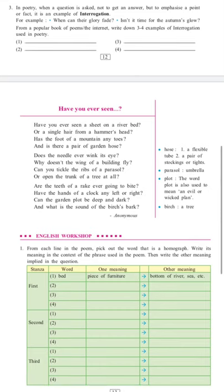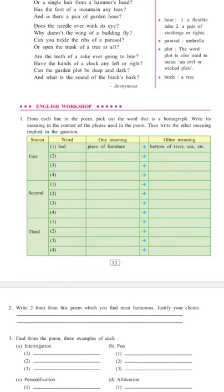English workshop. From each line in the poem pick out the word that is a homograph. Write its meaning in the context of the phrase used in the poem, then write the other meaning implied in the question. For example, in the first stanza there is a word 'bed'. One meaning of the word bed is piece of furniture. The other meaning of the word is bottom of the river, sea, etc. Similarly do the same for the first, second, and third paragraph.